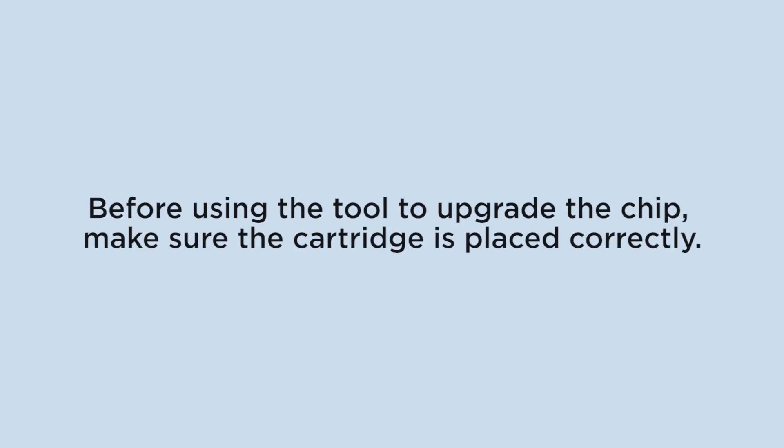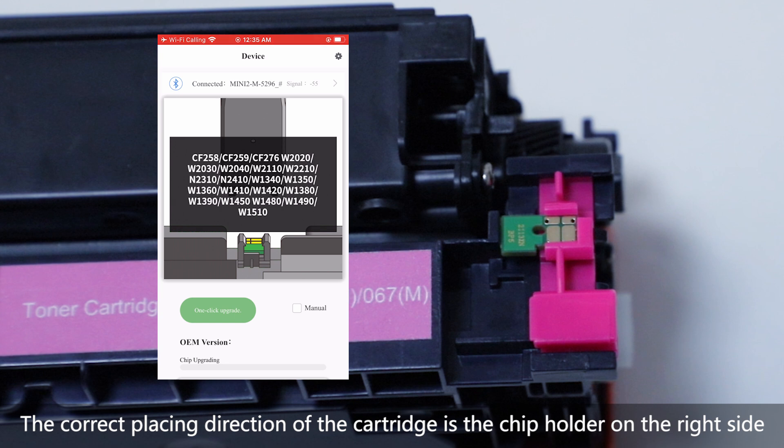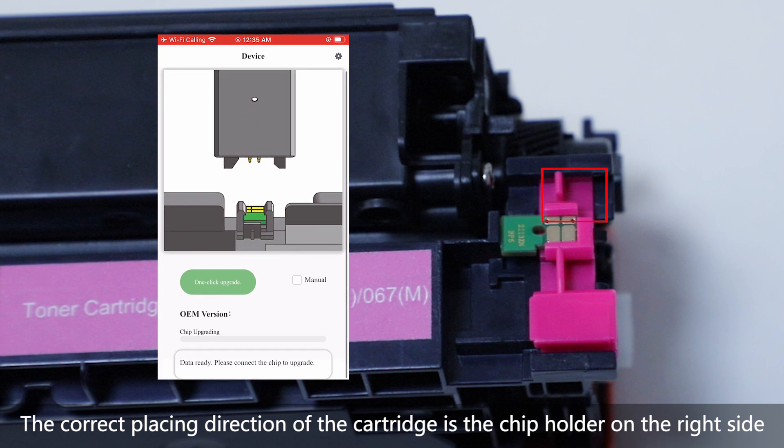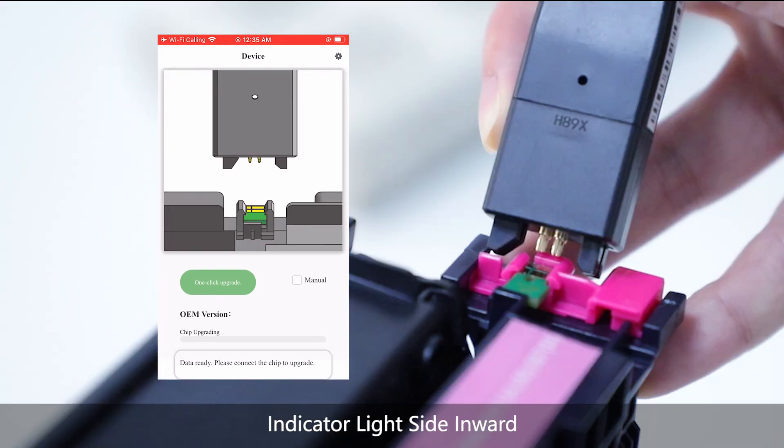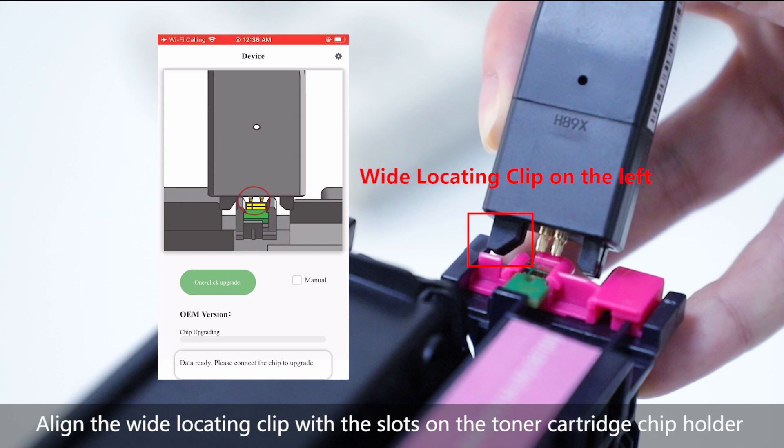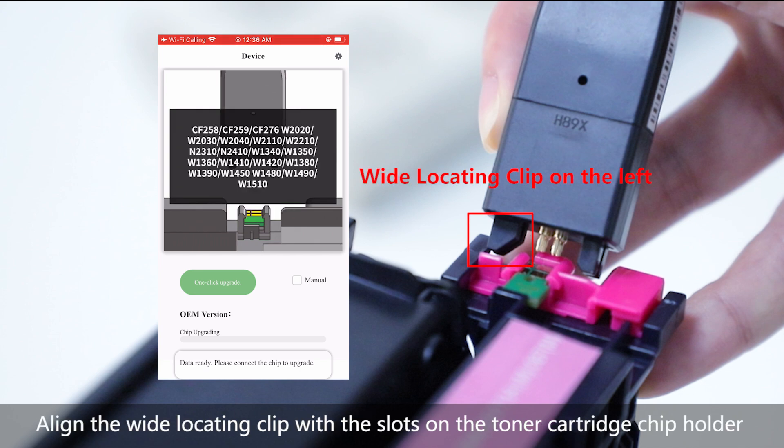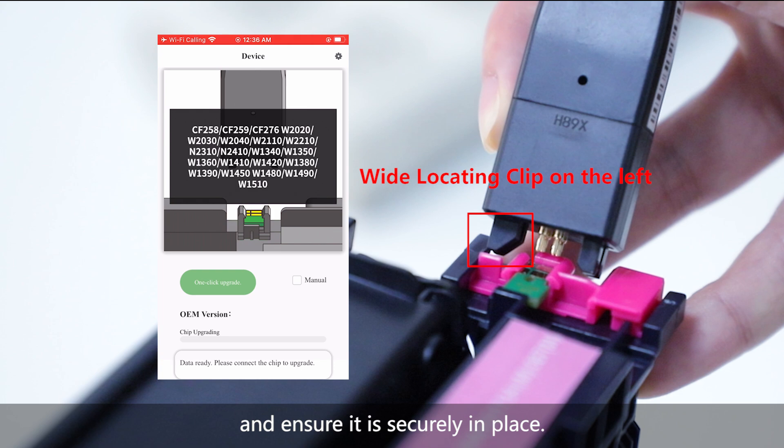Before using the tool to upgrade the chip, make sure the cartridge is placed correctly. The correct placing direction has the chip holder on the right side with the indicator light side inward. Align the wide locating clip with the slots on the toner cartridge chip holder and ensure it is securely in place.